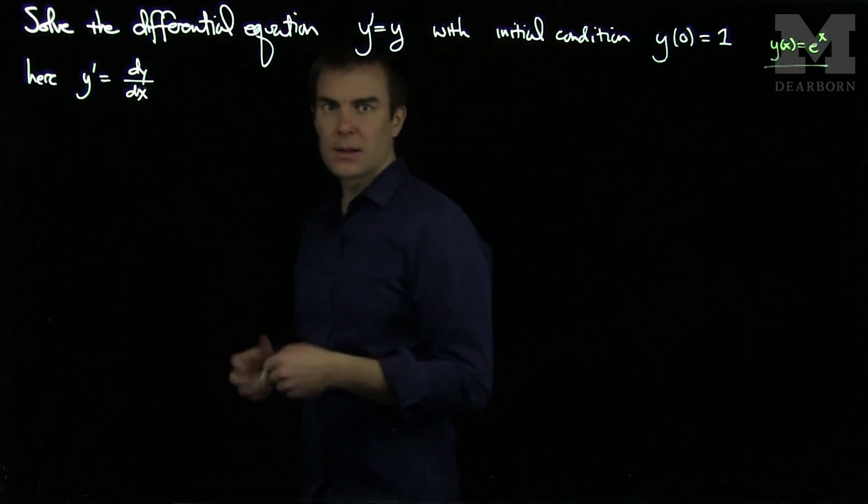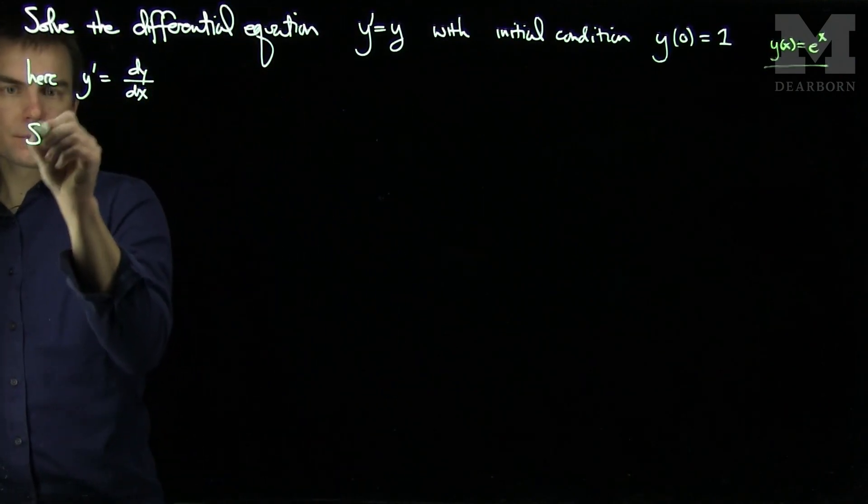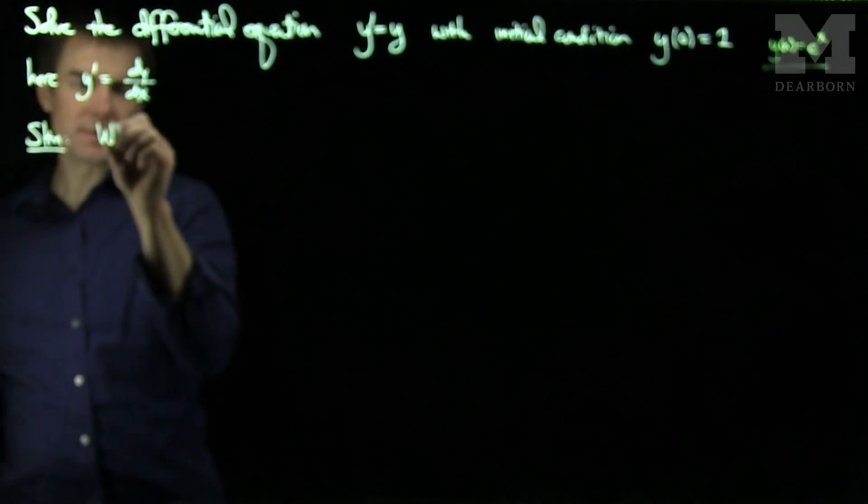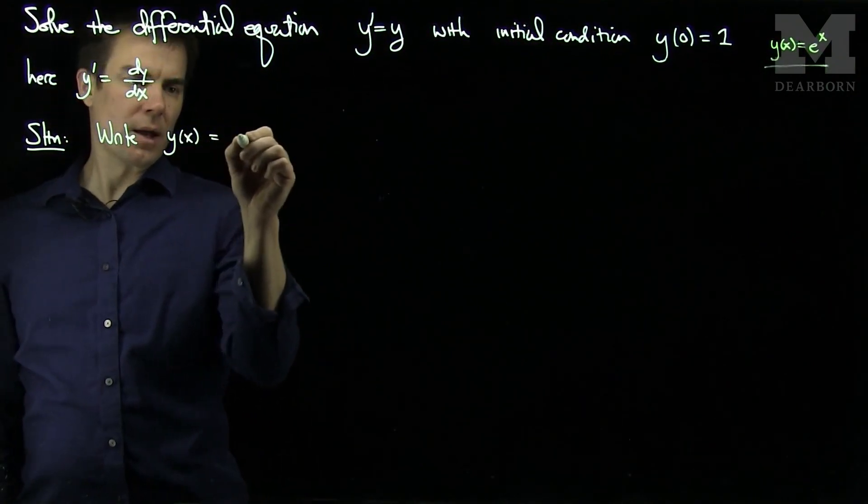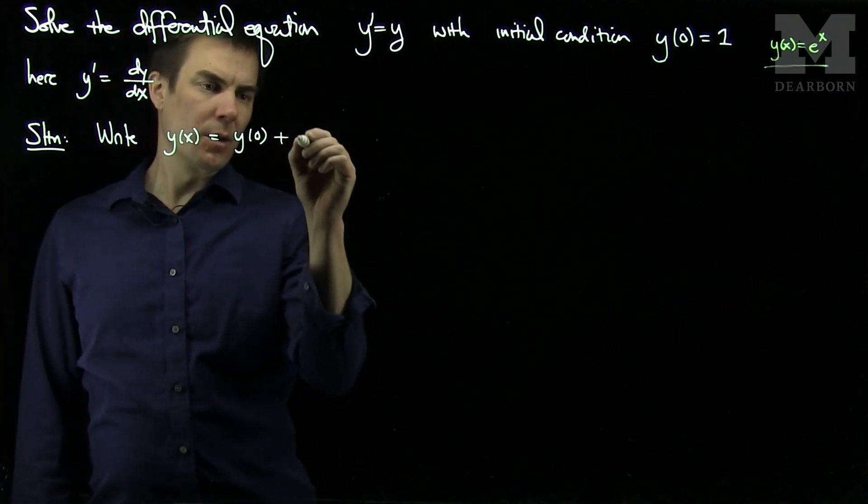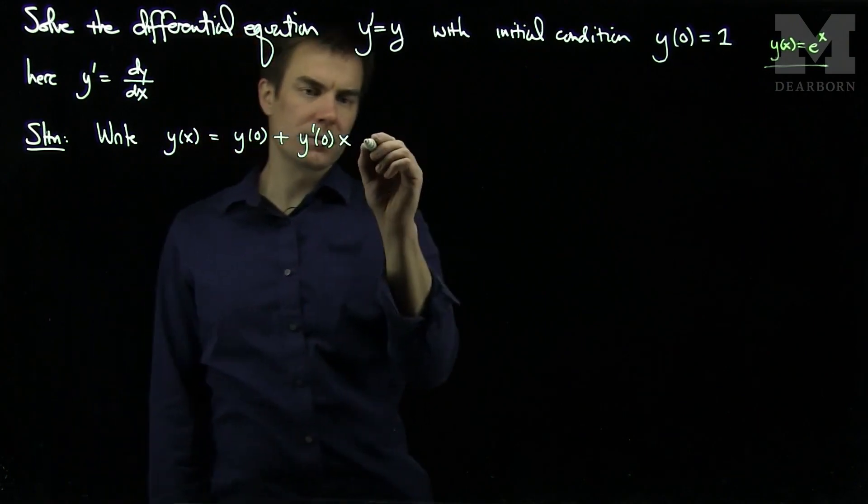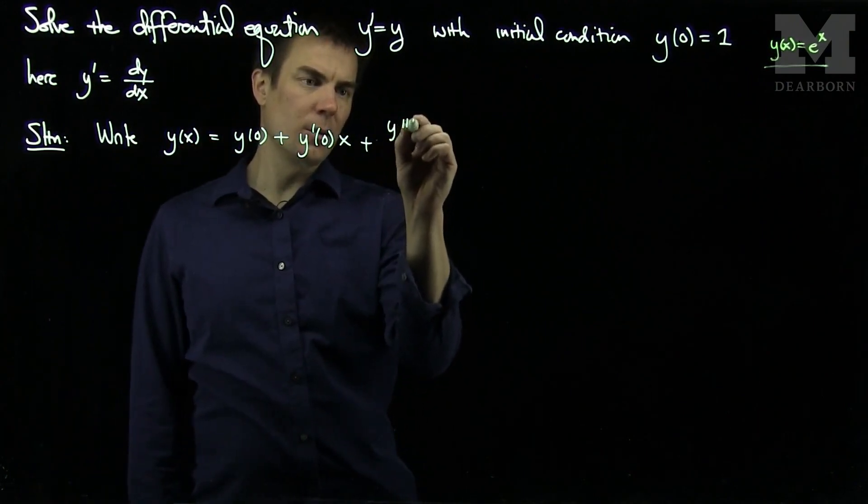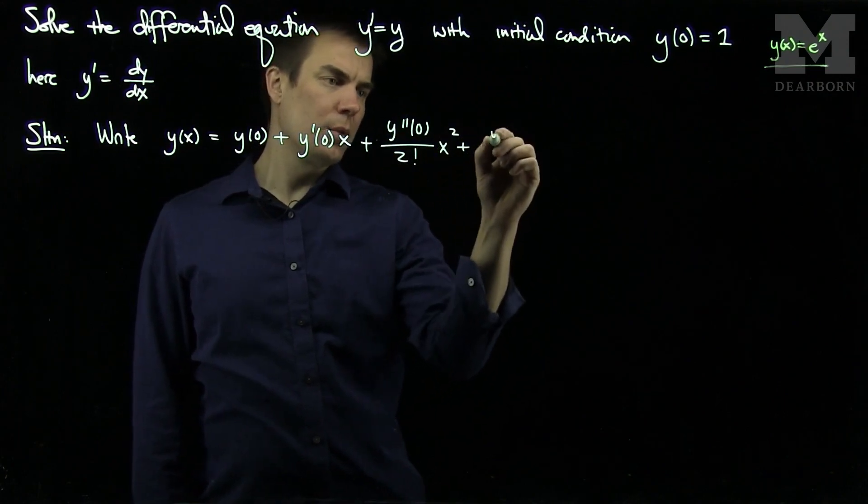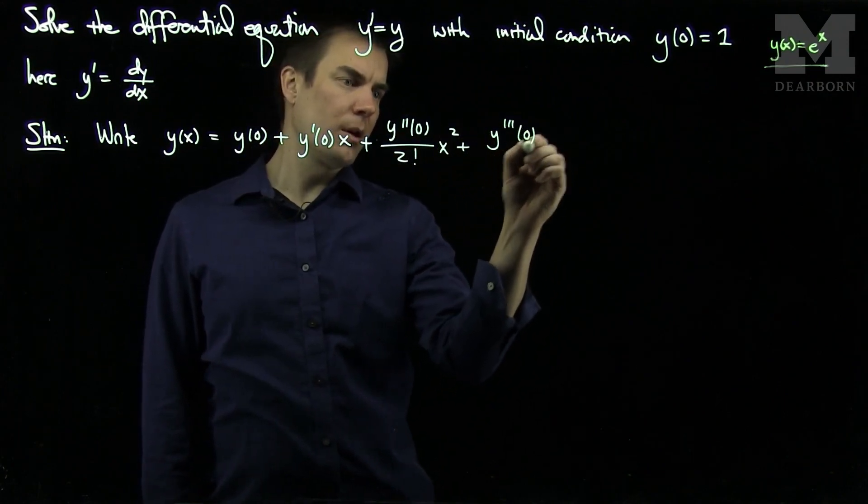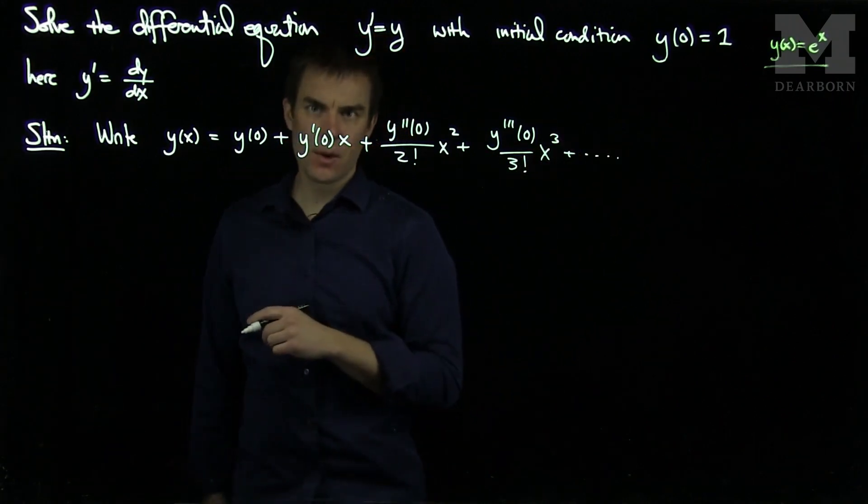But let's see how we can actually analytically prove that using Taylor series. So what we'll do here is write y of x is y of 0 plus y prime of 0 times x plus y double prime of 0 over 2 factorial x squared plus y triple prime of 0 over 3 factorial x cubed, and so on.